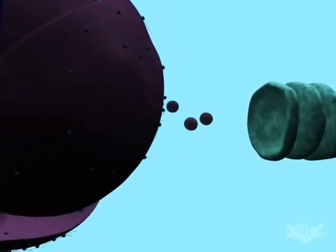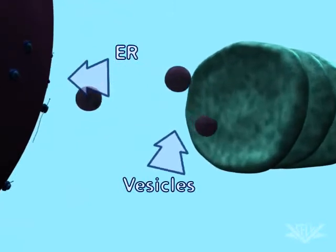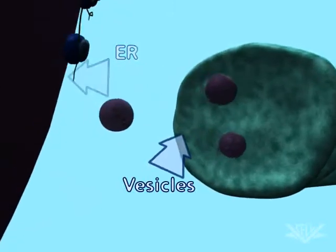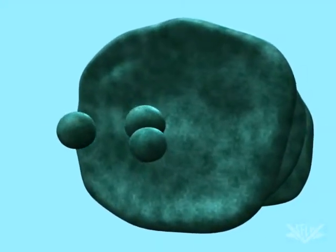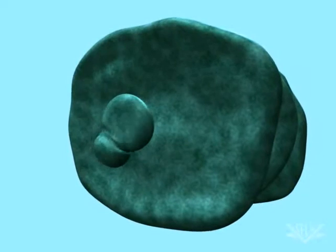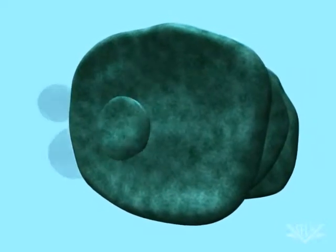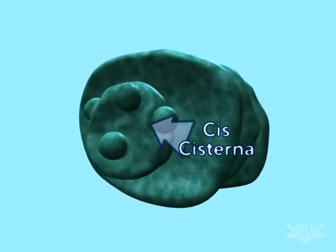Translated proteins are encapsulated in vesicles in the ER. A group of these vesicles fuse, and these fused vesicles form the cis-cisterna.